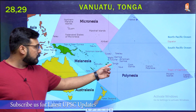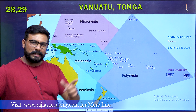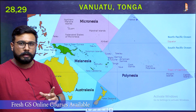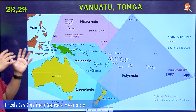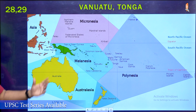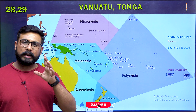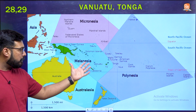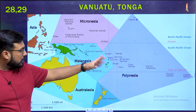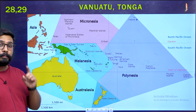Right now, two volcanic eruptions are very important: one that occurred in Vanuatu and the second, more important one, in Tonga. Before understanding these volcanic eruptions, let's understand which locations become important from a mapping point of view. Oceania's group of islands are divided into different groups: Micronesia, Melanesia, Polynesia, and Australasia. Vanuatu is located in Melanesia, and Tonga is located in Polynesia.